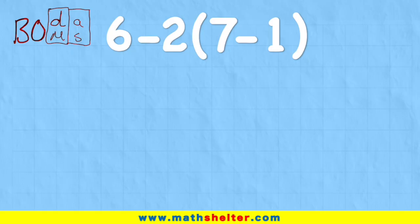So let's use BODMAS to help us solve this. And we have to start with B for brackets. I can see this bracket here. So let's solve what's in the bracket. Seven minus one is six.